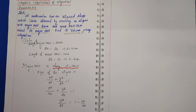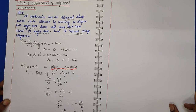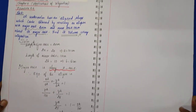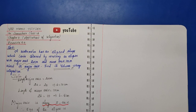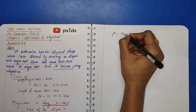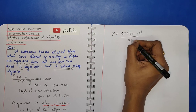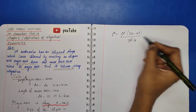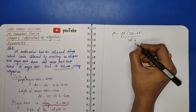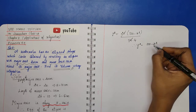Substituting the values, the right-hand side gives (100 − x²)/100. So y²/25 = (100 − x²)/100. From this, finding y²: y² = 25 × (100 − x²)/100 = (100 − x²)/4.